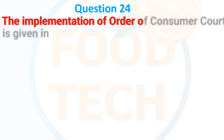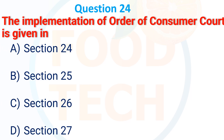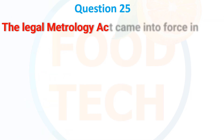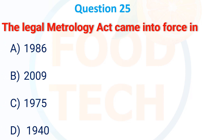The implementation of an order of consumer court is given in: A. Section 24, B. Section 25, C. Section 26, D. Section 27. The answer is Section 25.